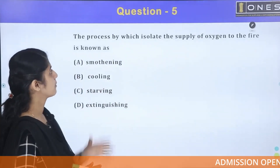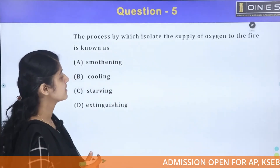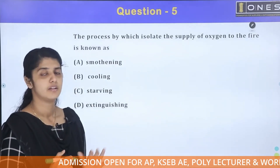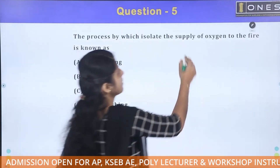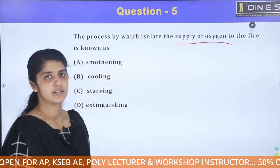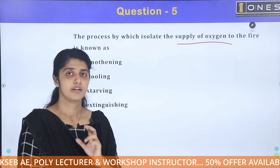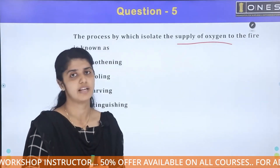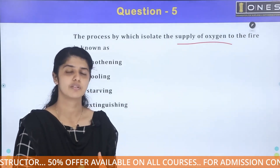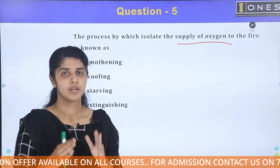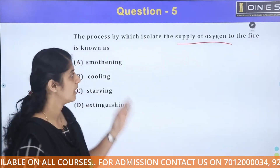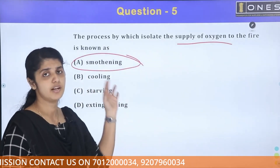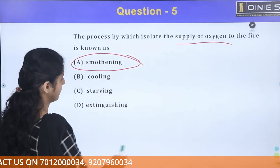Fifth question: the process in which the supply of oxygen to a fire is isolated is called what? By cutting off the oxygen supply, the fire is extinguished. This method works by isolating the oxygen from the fire, and fire extinguishers use this principle. The name of this process needs to be identified from the given options.